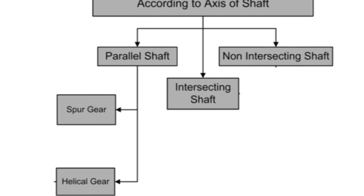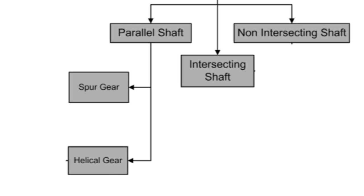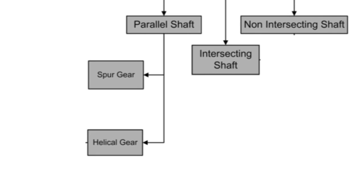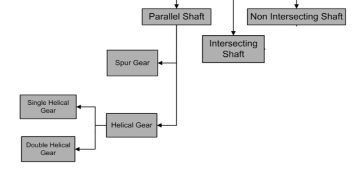Parallel shaft gears are classified into two groups: spur gears and helical gears. Further, helical gears are classified into two groups: single helical gear and double helical gear, also known as herringbone gear.